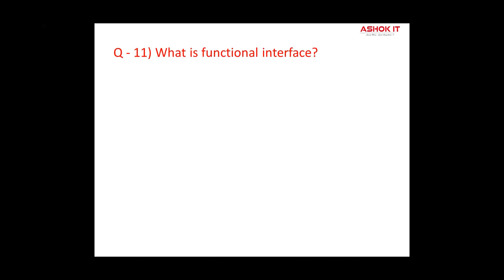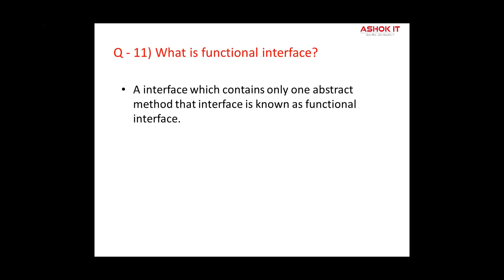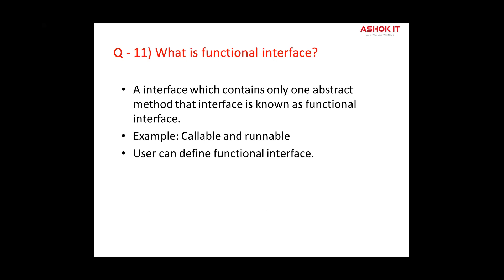Question eleven: What is a functional interface? A functional interface contains only one abstract method and is also known as a Single Abstract Method interface, or SAM. A functional interface can also contain default and static methods. Examples of built-in functional interfaces in Java include Callable and Runnable. You can use the @FunctionalInterface annotation when defining one.